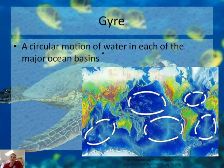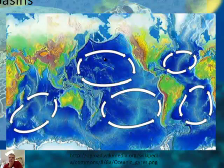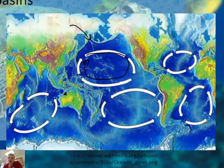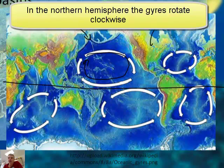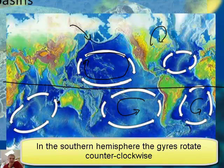A gyre is a circular motion of water in each of the major ocean basins. So essentially, you have surface currents in each major ocean. If we look at the Pacific Ocean, you've got this gyre — this circular motion. They don't all flow in the same direction. In the Northern Hemisphere they rotate clockwise, and in the Southern Hemisphere they rotate counterclockwise.